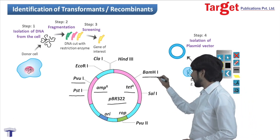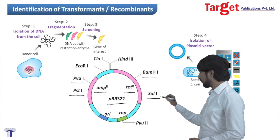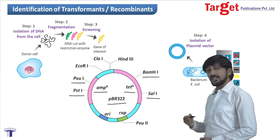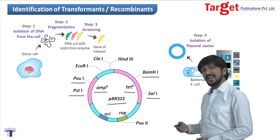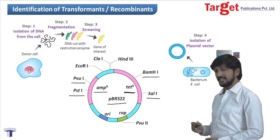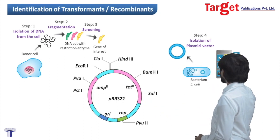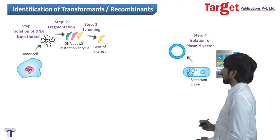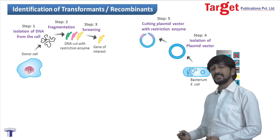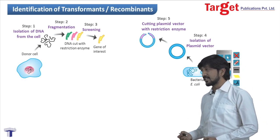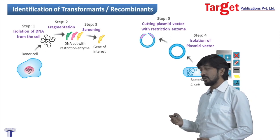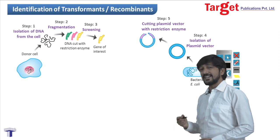If we use the restriction enzyme BamH1, it will cut the plasmid within the tetracycline resistance gene. So in the next step, cutting the plasmid vector with the restriction enzyme BamH1 will disrupt the tetracycline resistance gene.